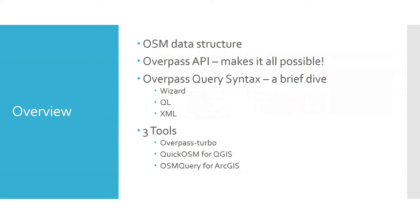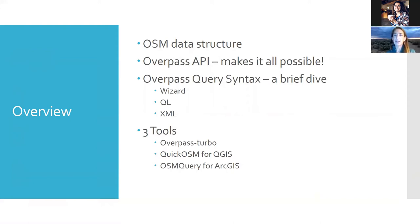A quick overview of what I want to talk about tonight: thinking about the OSM data structure, and then how does the query language in Overpass QL or Overpass Turbo work? I mentioned Overpass API — that's what we're hitting when we use these queries. I'll go into the query syntax a little bit, and there is the wizard that people were mentioning in their introductions that is so helpful. And then there is the Overpass query language, which is replacing the XML language you'll also see in other applications.